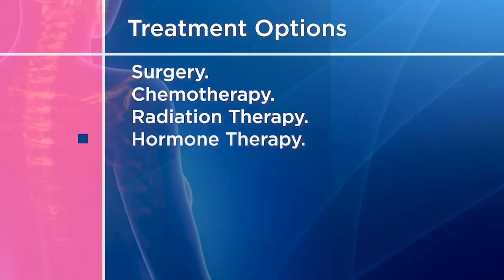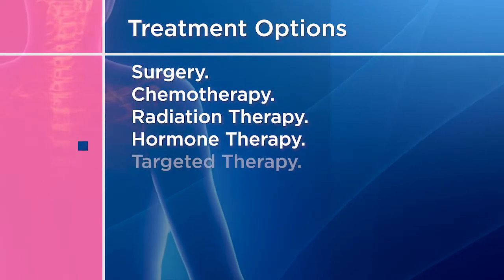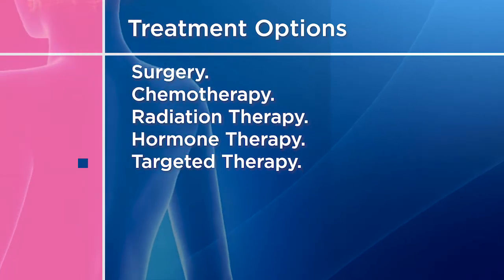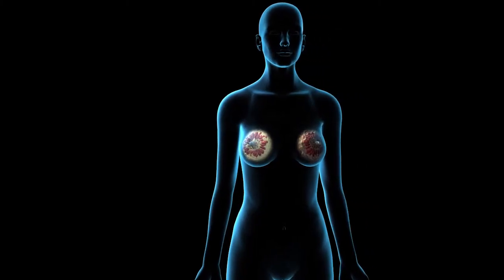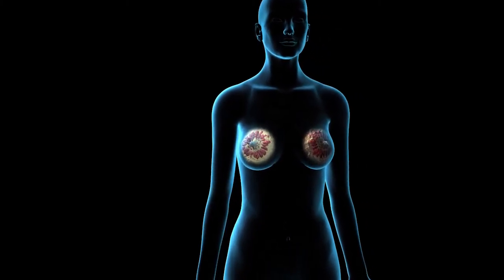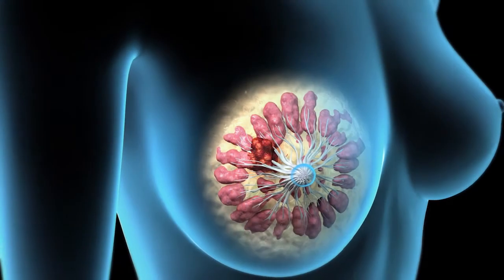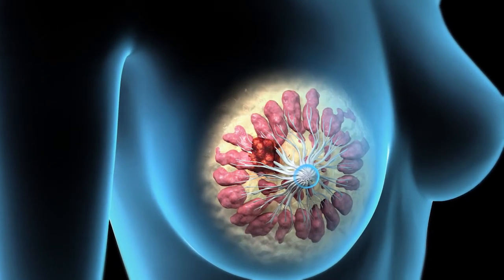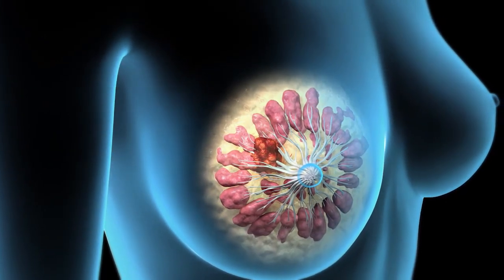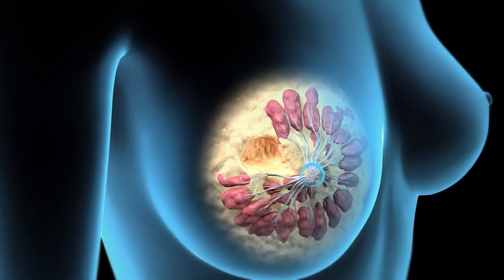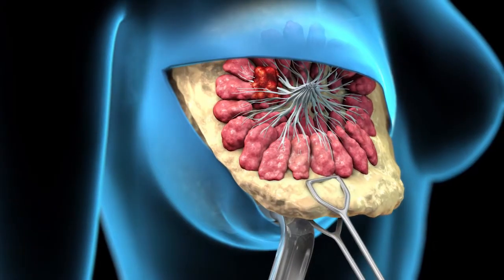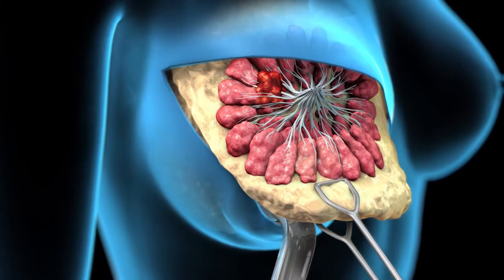Surgery is the most direct way to remove the breast cancer. The two options for breast surgery are breast conserving surgery, or lumpectomy, and a mastectomy.